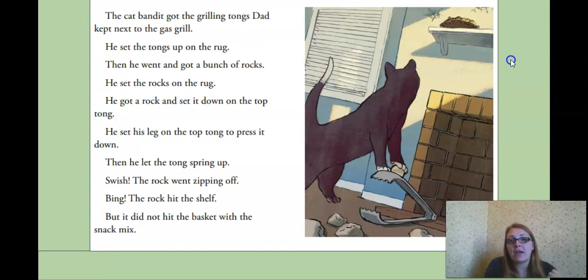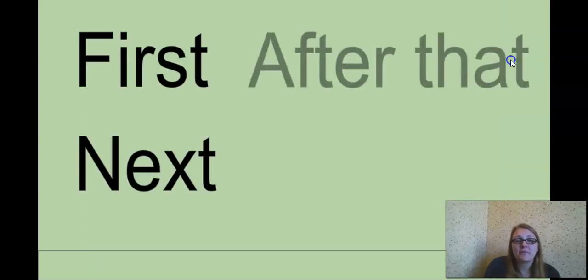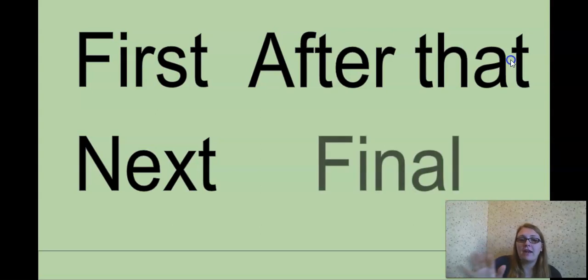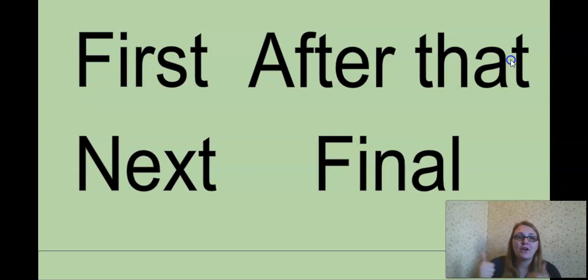Then, he ran outside and got what? He got some tongs. Good. And some rocks. So, first, he thought, saw the snack mix, thought he had to have it. He went and gathered all of his materials, the rocks and the tongs. After that, yes, after that, he set up the tongs with the rocks and started shooting them. How many did he shoot? So, yes, six rocks, nothing, but finally, on the seventh rock, he knocked the basket down and was able to eat the snack mix. Great job.